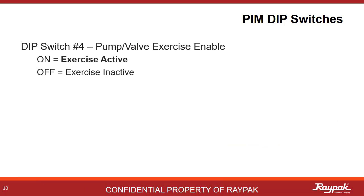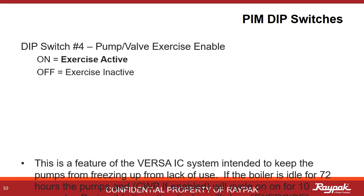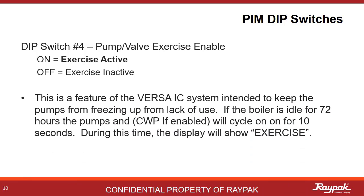PIM dip switch number four is an example of some helpful Raypack engineering. With PIM dip switch number four on, the boiler will cycle the pumps and cold water protection if present after a period of 72 hours of inactivity. So say you're in shoulder weather like spring or fall and you get a week of warm weather where the boiler does not need to fire — you don't want the pump to seize up from inactivity, so this system helps to prevent that. After 72 hours, the pumps will run for just 10 seconds to keep things working properly. During these 10 seconds, the display will show 'exercise.'